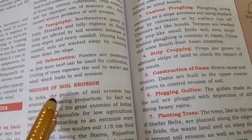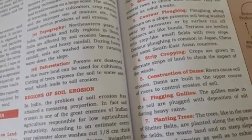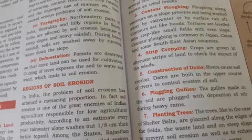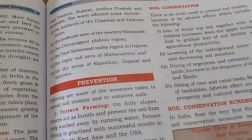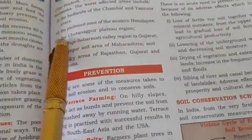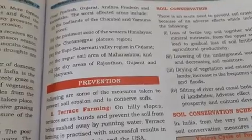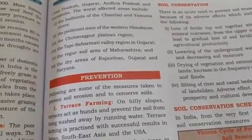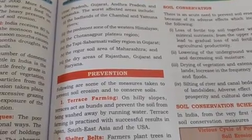Let me explain the regions of soil erosion. In India, the problem of soil erosion has attained a menacing proportion. In fact, soil erosion is one of the great enemies of Indian agriculture, responsible for low agricultural productivity. The worst affected areas include the badlands of Chambal and Yamuna rivers, the Bhabar zone of the western Himalayas, the Chhota Nagpur Plateau region, the Tapi and Sabarmati Valley regions in Gujarat, the regular soil area of Maharashtra, and the dry areas of Rajasthan, Gujarat and Haryana.